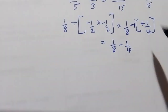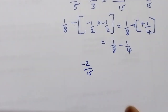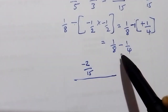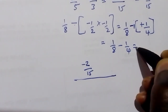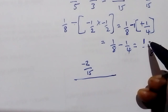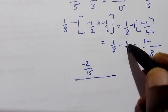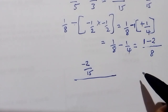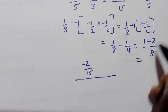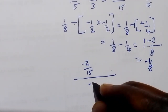So now we have our numerator negative 2 over 15 divided by our denominator. We find the LCM of 8 and 4, which is 8. 8 goes into 8 one time: 1 times 1 is 1. 4 goes into 8 two times: 2 times negative 1 is negative 2. So 1 minus negative 2 gives negative 1 over 8.